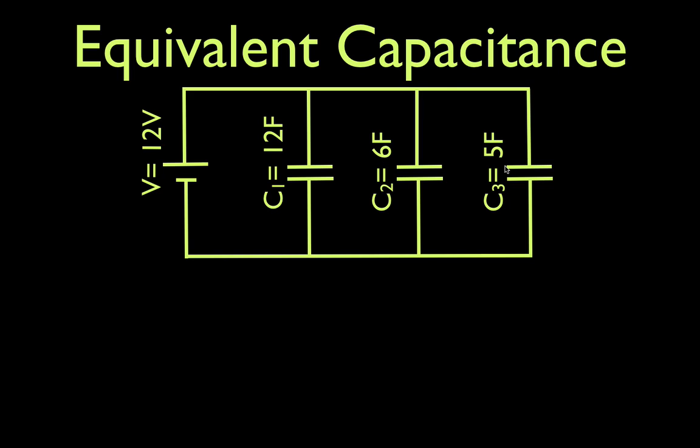Okay, and the rule for adding them up and for figuring out the equivalent capacitance is pretty straightforward. All you have to do is add them up. The equivalent capacitance or the total capacitance is simply C1 plus C2 plus the capacitance of capacitor number 3, and so on, and so on, if you had more.